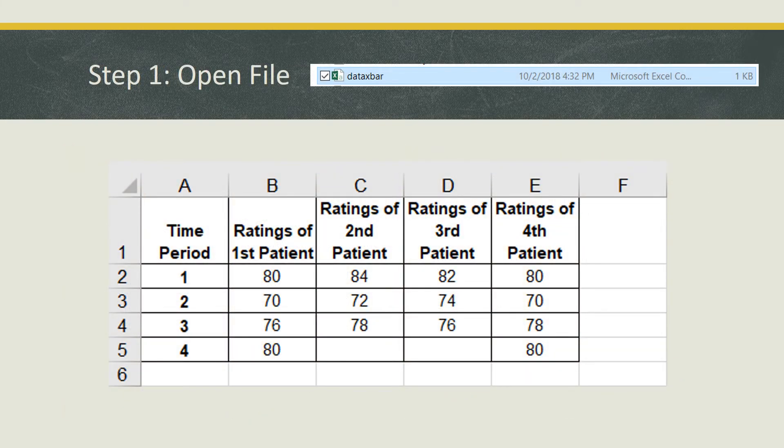Okay, so let's go to the first step. You'll open the file titled data X bar. And the first thing that should pop up is the question one tab. And that contains five columns: the first being the time period, and then four additional columns for ratings of four different patients. Each row corresponds with the time period one through four.